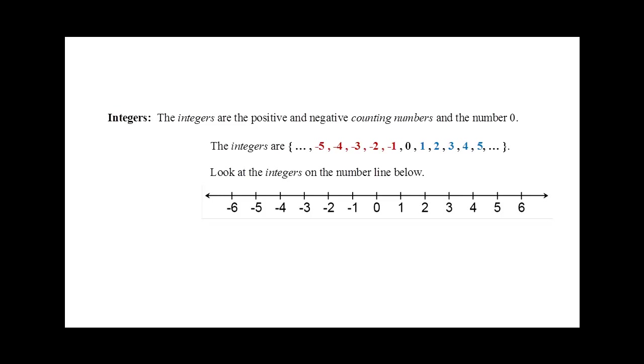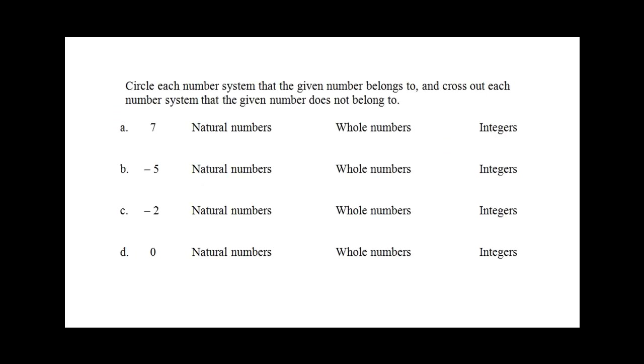Now let's look at our problem. First let's look at the number 7. Is 7 a natural number? Yes. So we will circle the natural numbers. Is 7 in the list of whole numbers? Yes it is. And 7 is also an integer.